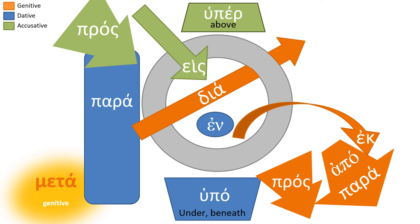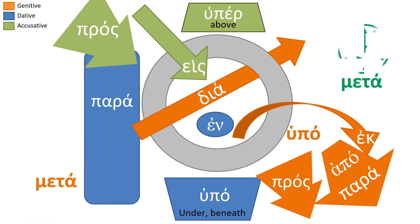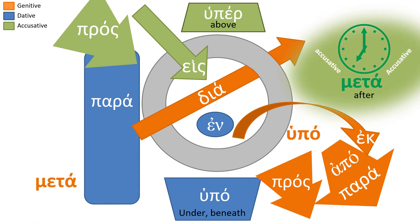There are also two genitive prepositions which are more associative than directional. That's meta, meaning 'with,' and hupo, meaning 'by.' Finally, there's meta in the accusative, which means 'after.'